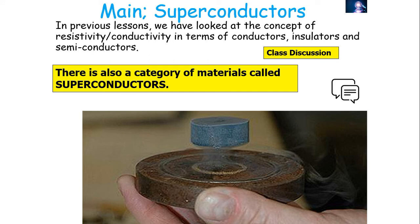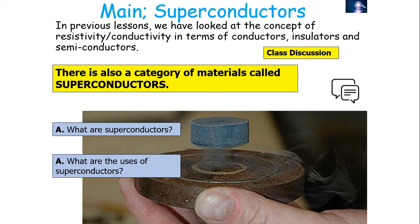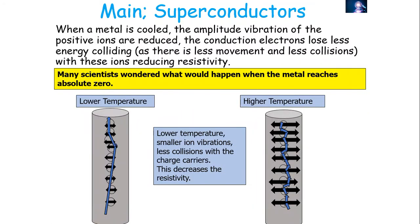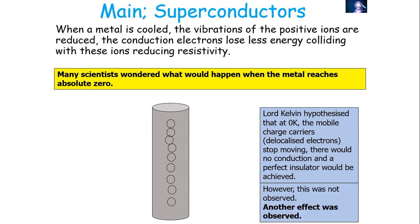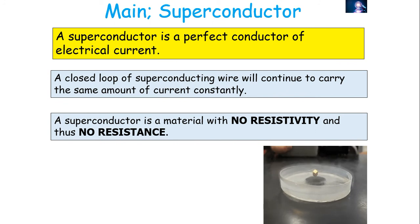There is also a category of material called a superconductor. When a material is cooled down, the amplitude of vibration of positive ions is reduced, conduction electrons lose less energy in collisions, and resistivity decreases. Scientists wondered what would happen at absolute zero. Lord Kelvin hypothesized that mobile charge carriers would stop moving, achieving a perfect insulator — but this was not observed. Instead, the phenomenon of superconductivity was discovered.